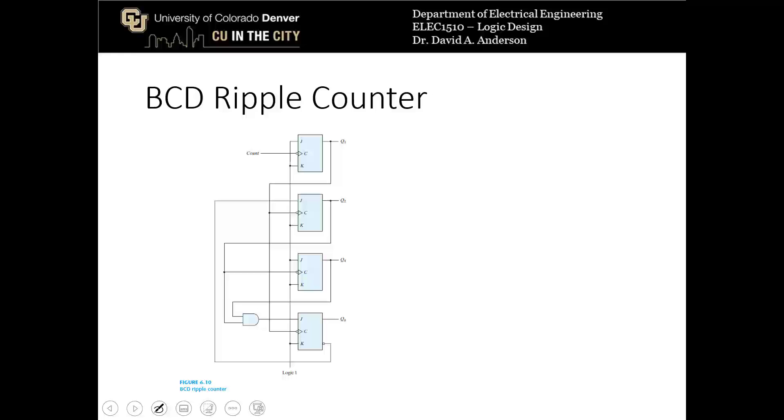One implementation of a BCD ripple counter looks like this. I'm not going to go through the whole derivation of this because it's pretty complicated, but this is an implementation that will actually produce the BCD count. Now you can see that this one uses JK flip-flops and we'll call these 1, 2, 4, and 8 for the places in the binary numbers.